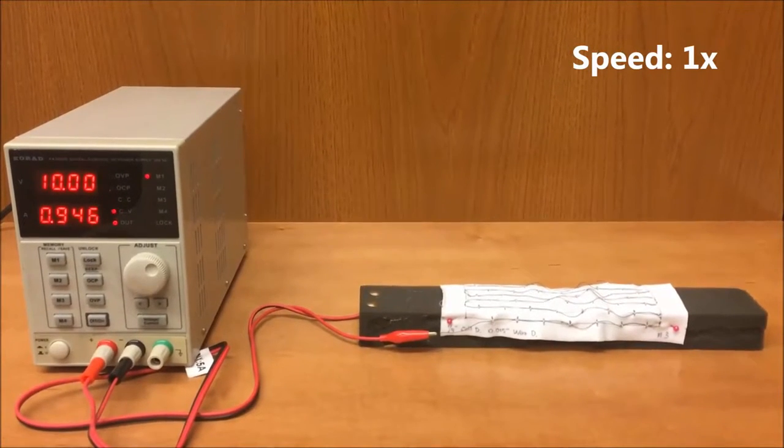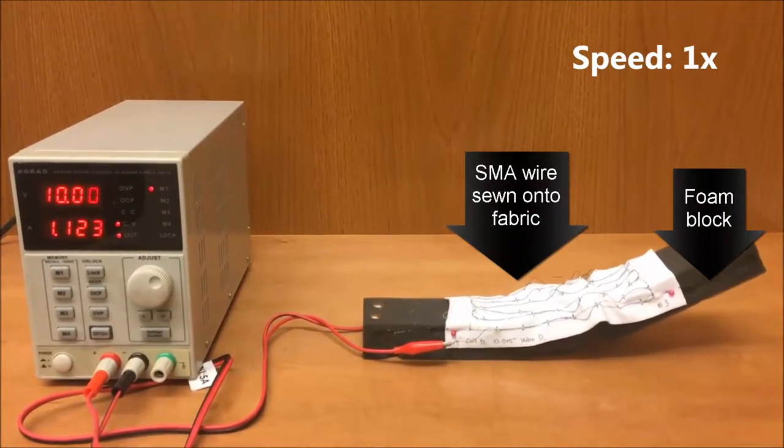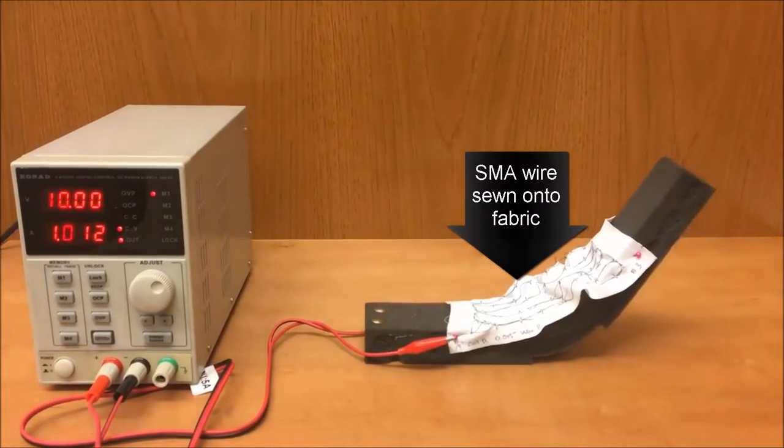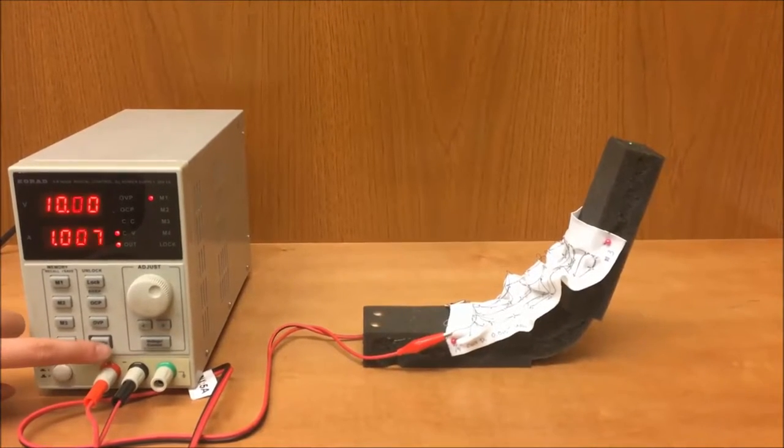In the first segment of this video, we demonstrate bending of the foam block by wrapping the fabric such that the length of the SMA wire is aligned with the length of the foam block. This causes the block to bend when the SMA is heated up.